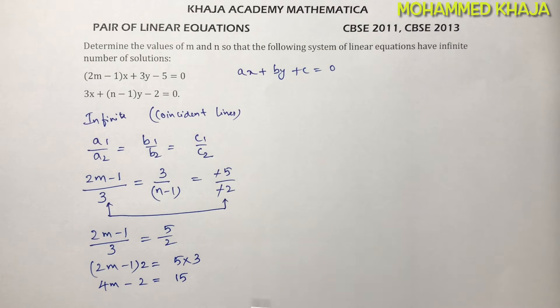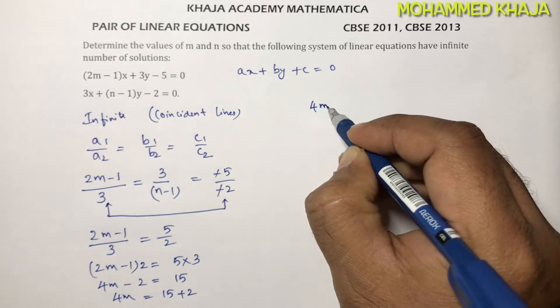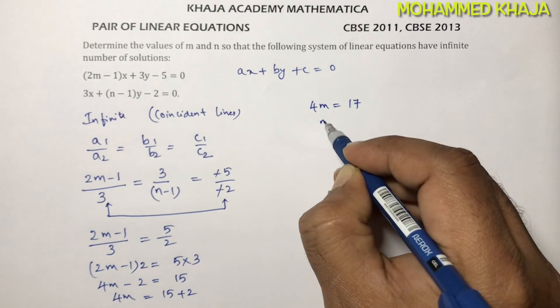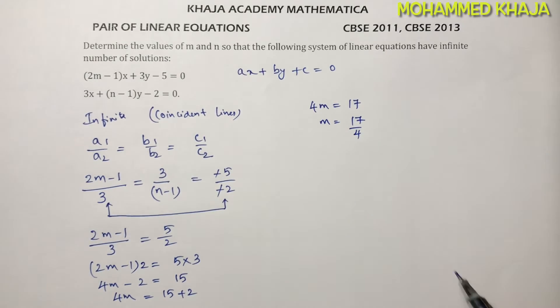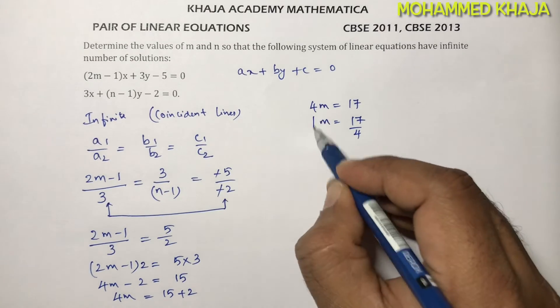So 4m equals 17. The value of 4m is 17, so m value is 17 by 4. This is the value of m.